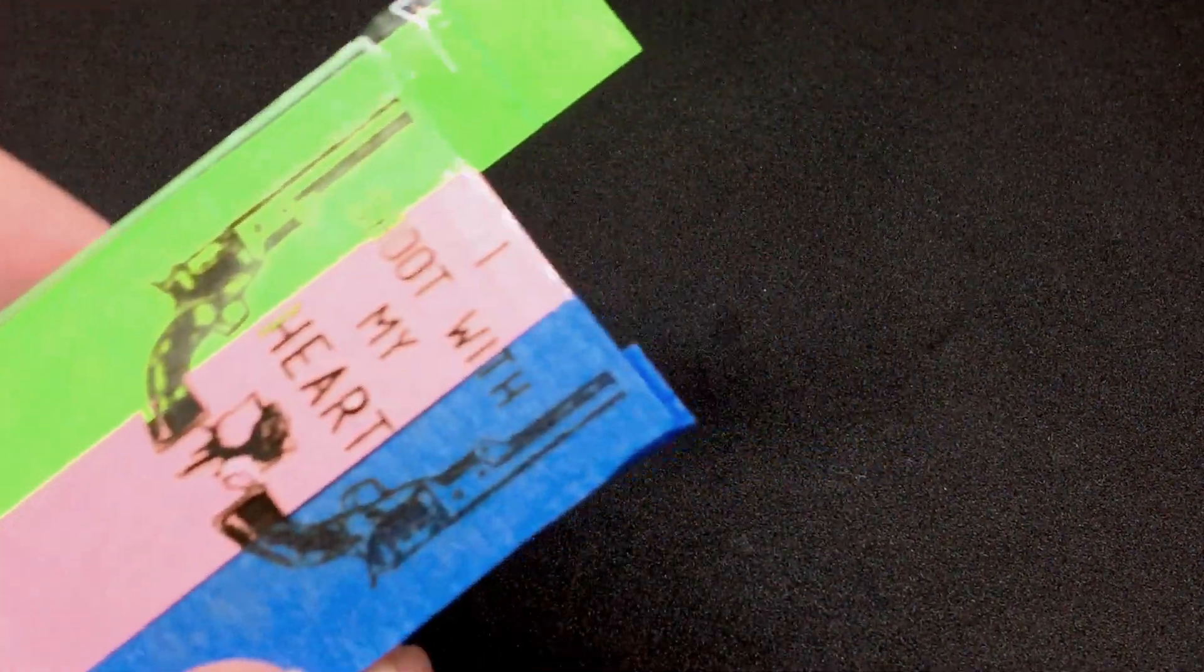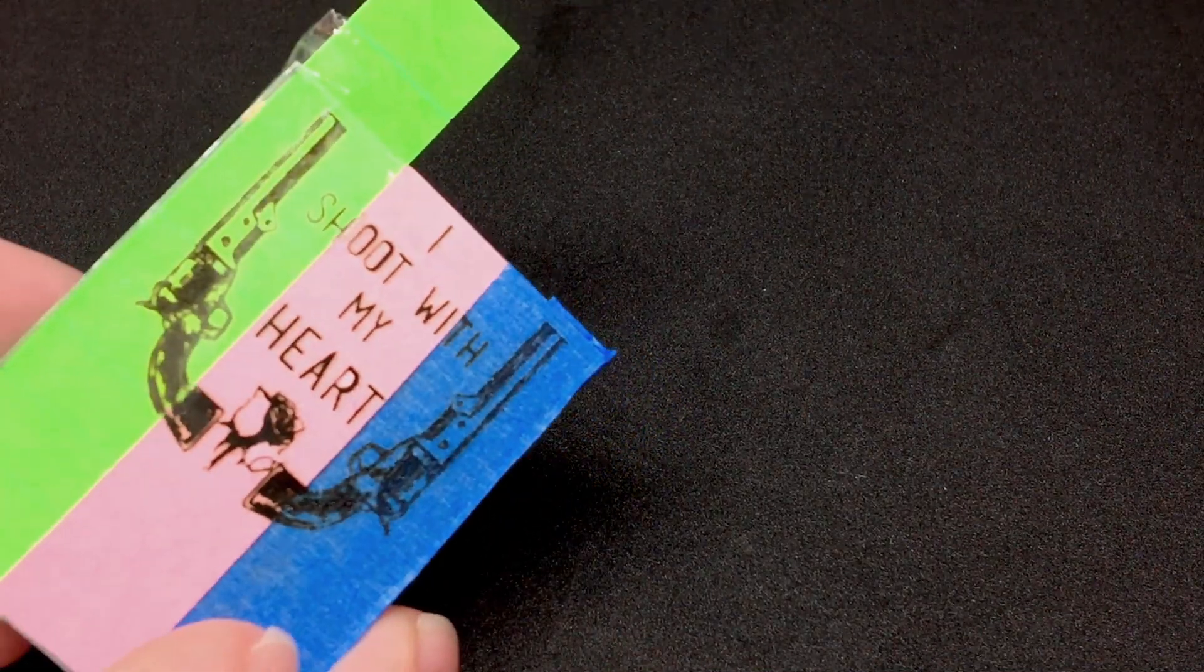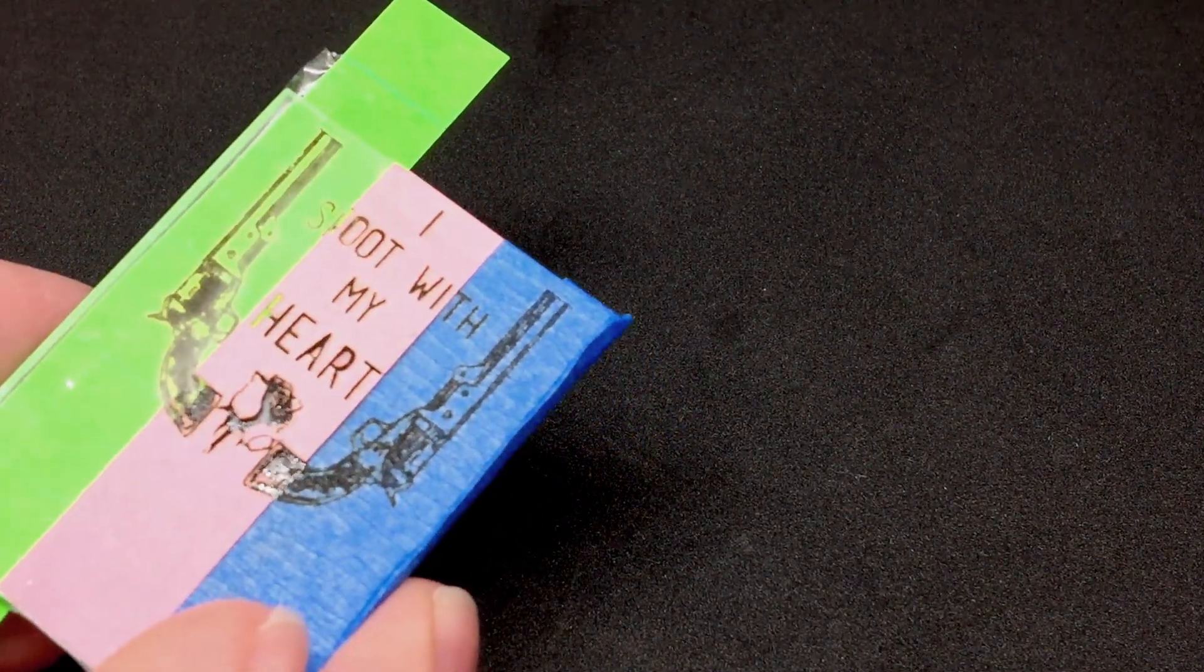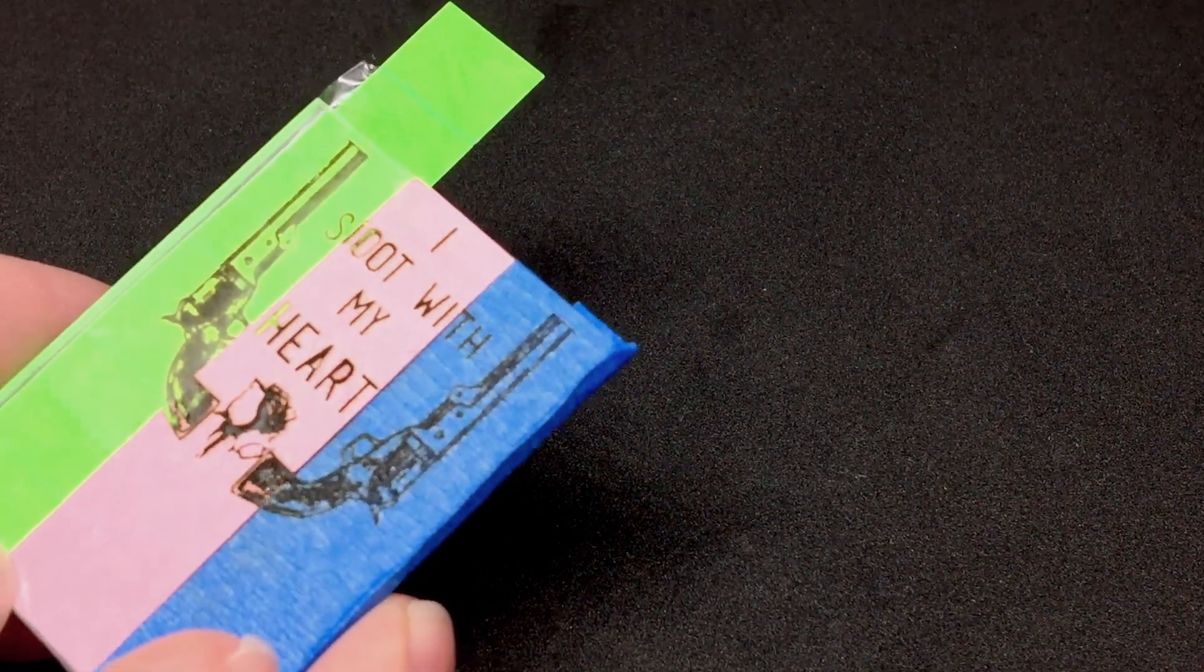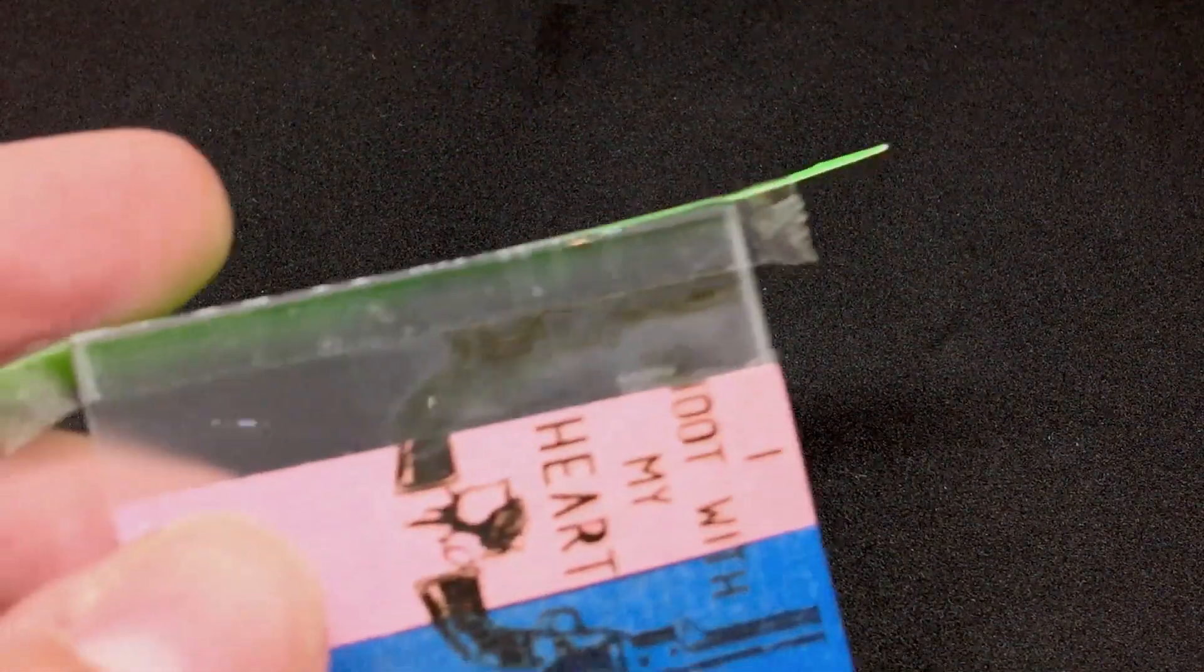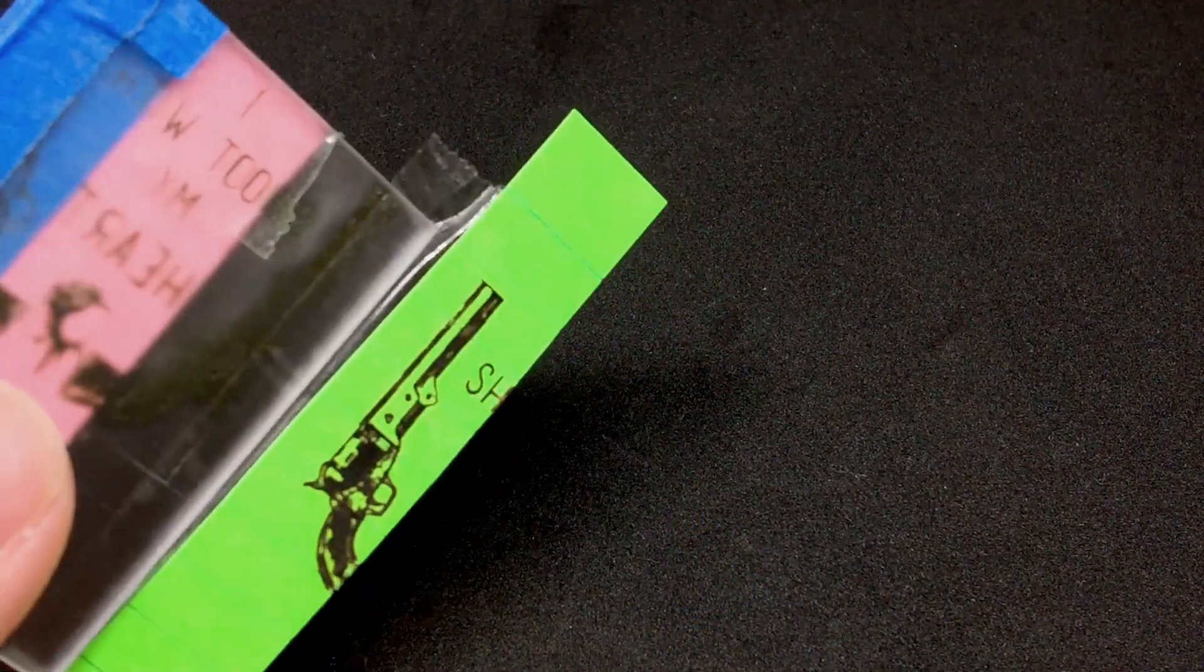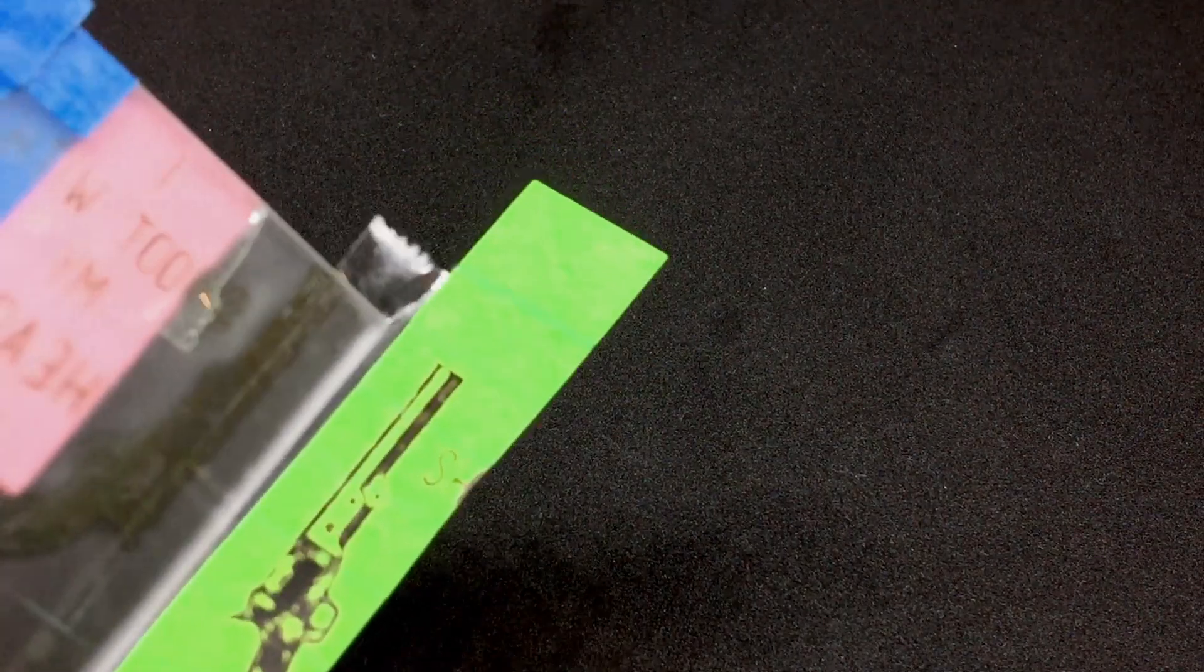So here we are. Everything looks really good as far as etching into the mediums go. The big question is whether or not it transferred how I expected it to. I started by peeling off the index card. And it looks pretty good. I can see a good film there where it looks like things were melted.